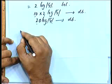10 by 10 plus j omega, I might as well write this as 10 by 10 into 1 plus j omega by 10. So, that gives me 1 by 1 plus j omega by 10.